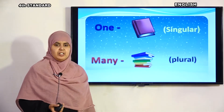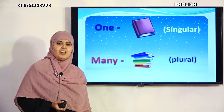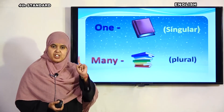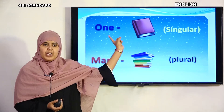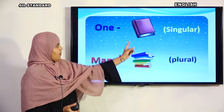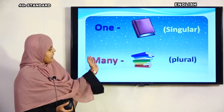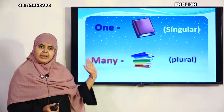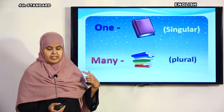Now we are going to learn singular and plural. Singular means one — 'waahid' in Urdu. Plural means many — 'jamah' in Urdu. Just as in Urdu class you study waahid and jamah. Here, singular means one and plural means many. Look at the picture — one book is singular, and books (many) is plural.